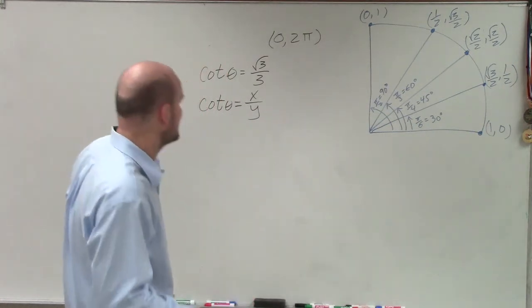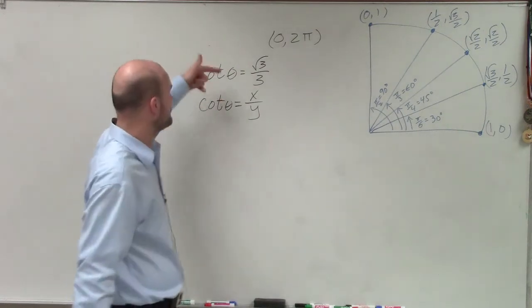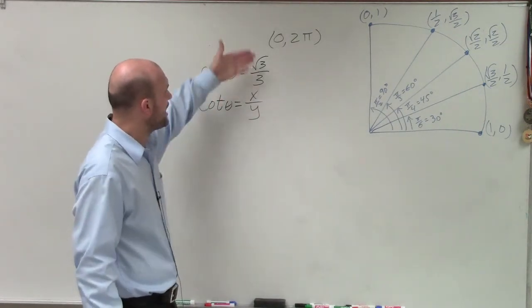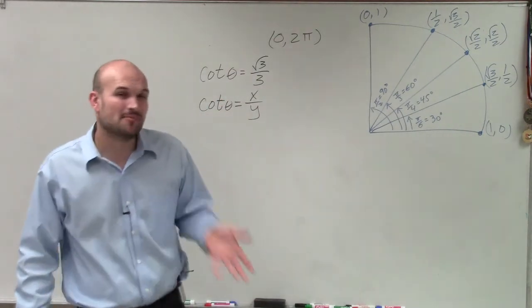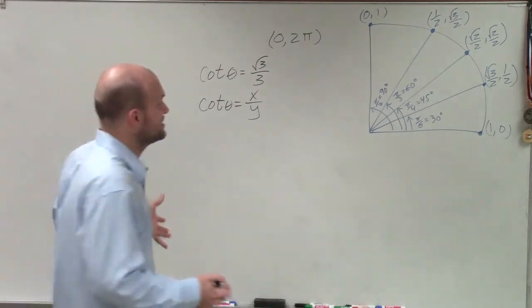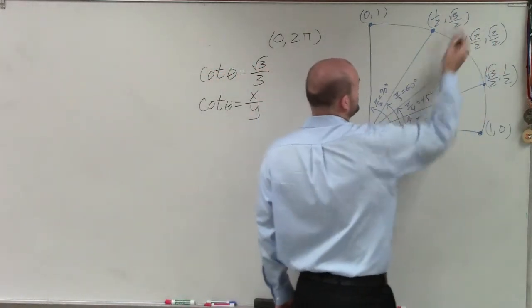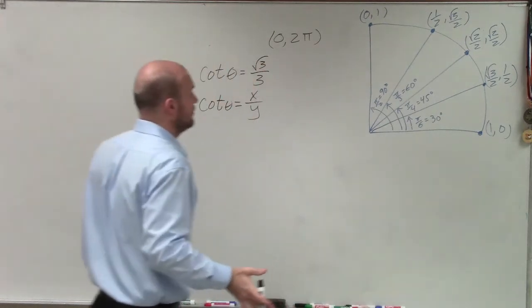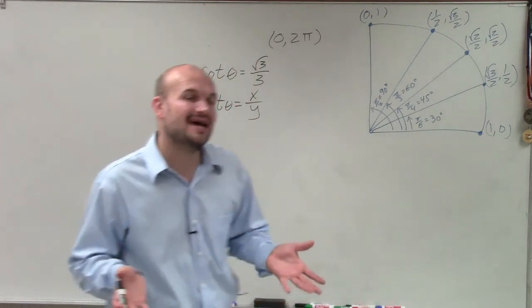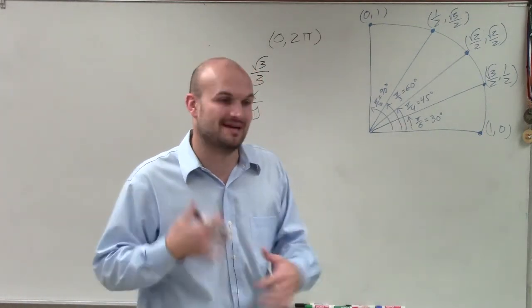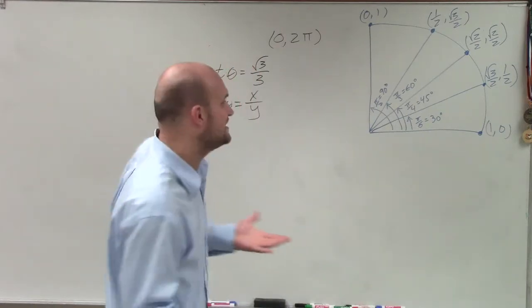And a lot of times when students are looking at this, when we're trying to evaluate cotangent, we're trying to find what is the angle when our x-value over our y-value equals the square root of 3 over 3. Now remember, that's a simplified answer because if you take your x over your y for each one of these, you're going to be like, well, which one of those is going to be square root of 3 over 3? So a lot of times what we have to do is the simplifying. And once you do enough of this, you'll be able to see the answer very quickly.